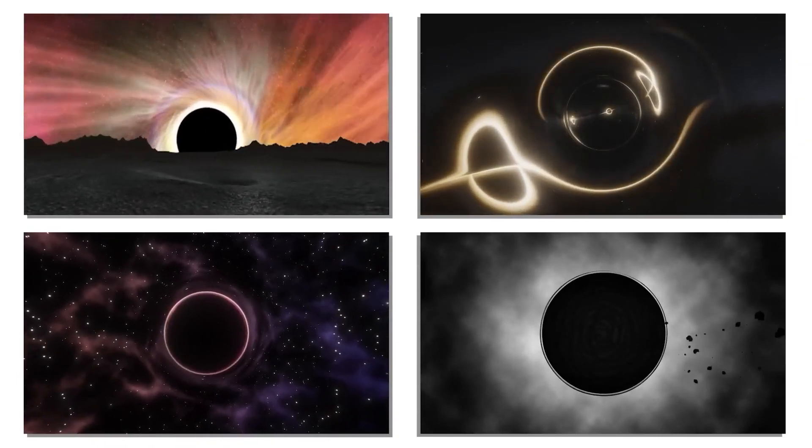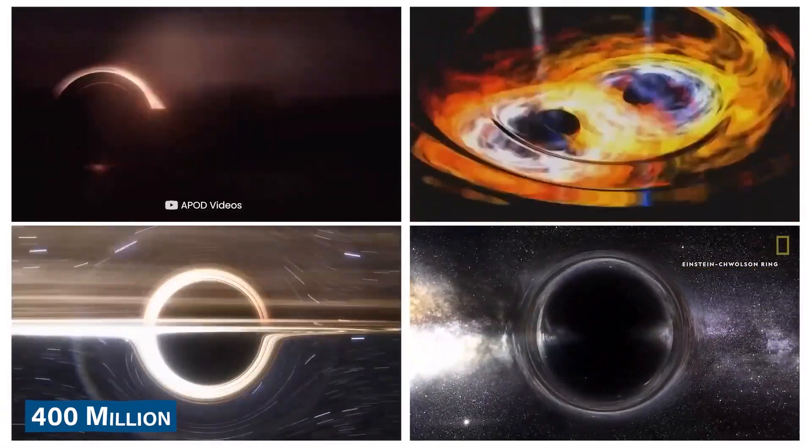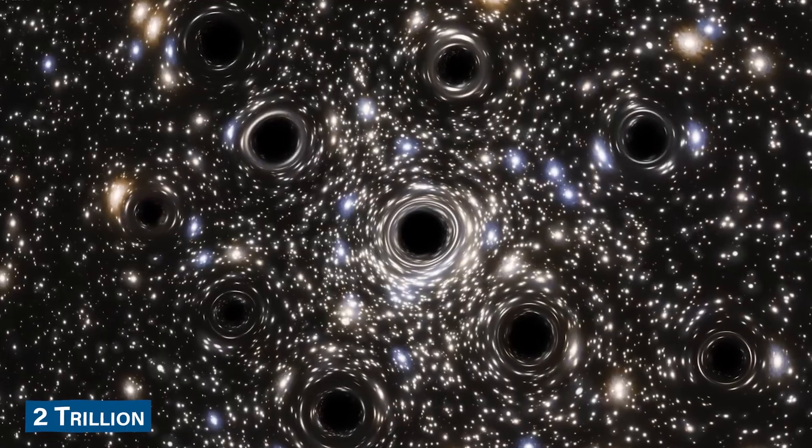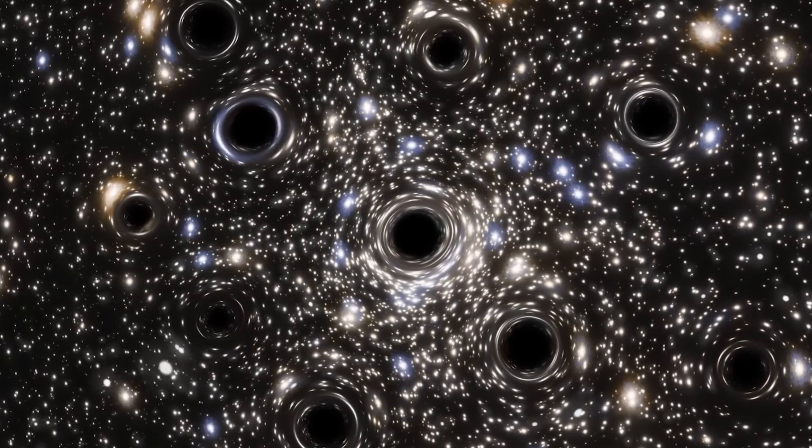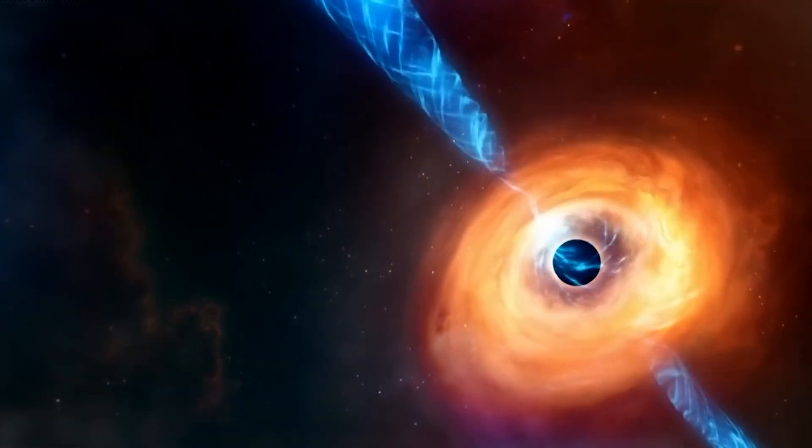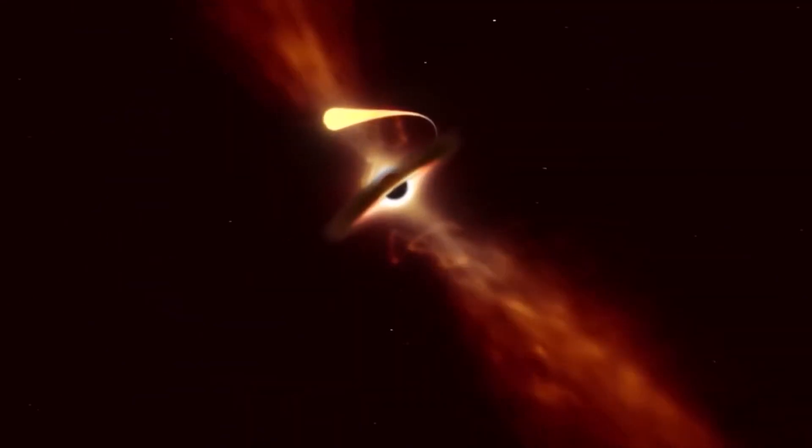And here's something mind-blowing: black holes aren't rare, they're actually everywhere. In our Milky Way alone, there could be around 400 million black holes, and in the observable universe, there could be at least 2 trillion galaxies with supermassive black holes at their centers. Each black hole is unique, with its own gravitational pull and set of rules. So, what are these rules?